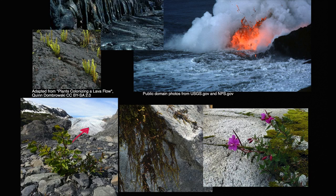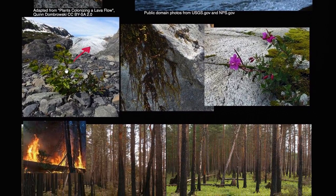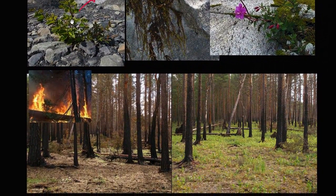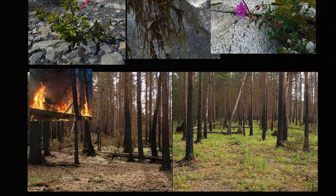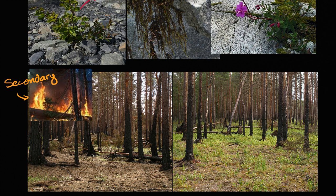That's primary succession. Another situation is secondary succession, and there are many different ways you could have secondary succession. One of the most cited examples is when you have some type of a disaster. This right over here is a picture of a fire. With secondary succession, you had a community, but then a fire might wipe out a lot of it, creating space for other things to form.